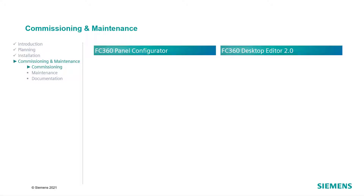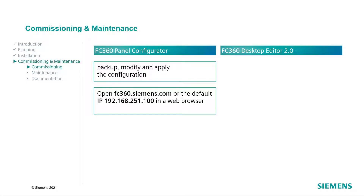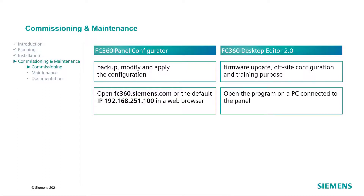The commissioning of the FC360 is done with the online tool FC360 Panel Configurator. The panel has an integrated web server that can be accessed with a web browser — no additional software is needed. The FC360 Panel Configurator is mainly used to backup, modify and apply the configuration of the Fire Control Panel. To access the panel configurator, open a web browser and enter fc360.siemens.com or the IP address in the address bar. The default IP address is 192.168.251.100. For a firmware update, an off-site configuration, or practicing configuration steps, use the FC360 Desktop Editor. Install and open the Desktop Editor software on a computer connected to the Cerberos Fit panel. Download the software using the link below this video.